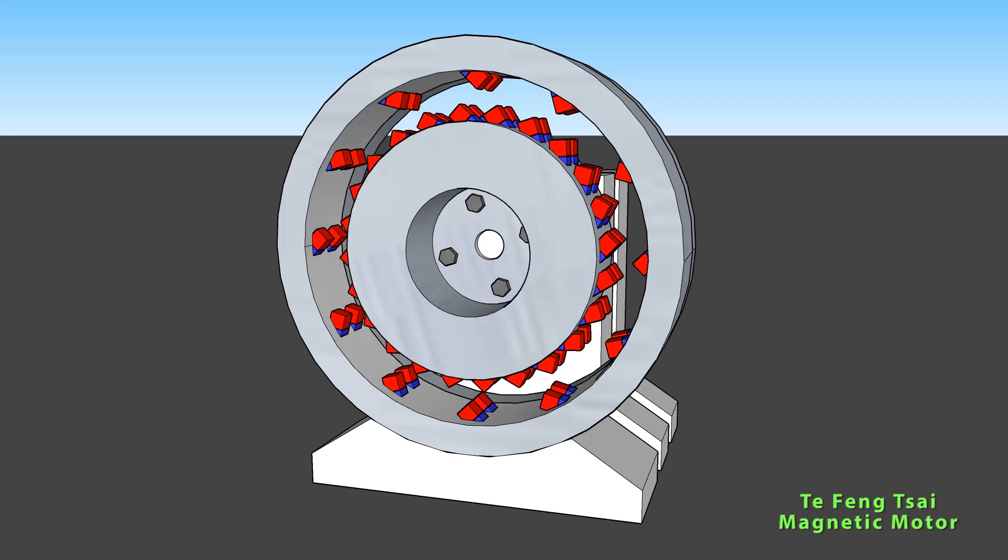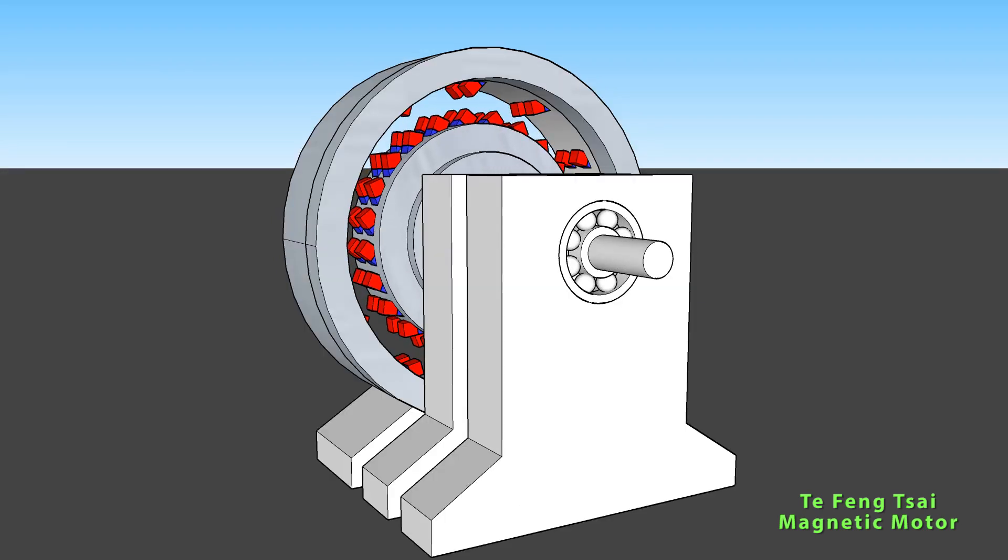The Te Feng Cai magnetic motor has a stator and rotor like any other motor, but as you can see from first sight, I will start the animation in front of my face. You can see that there are a lot more magnets on the rotor than on the stator, and what would that